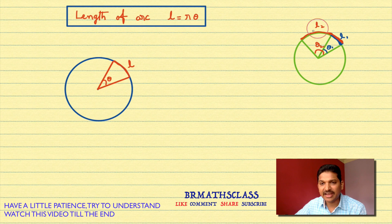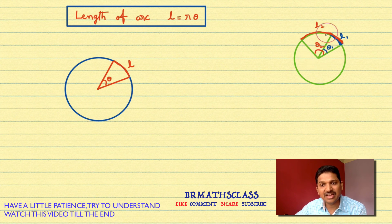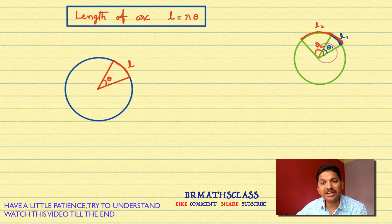Now observe this diagram — the green color circle. L1 is the length of this arc and theta1 is the angle subtended by this arc at the center. If I increase this length of arc, then the angle subtended by this arc at the center also increases. This tells you that the length of arc and the angle subtended by it at the center are proportional to each other.